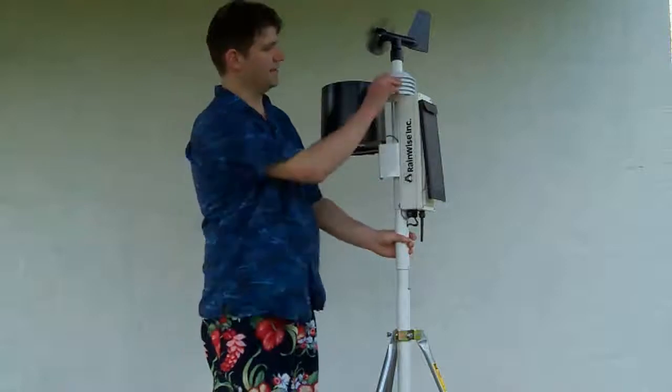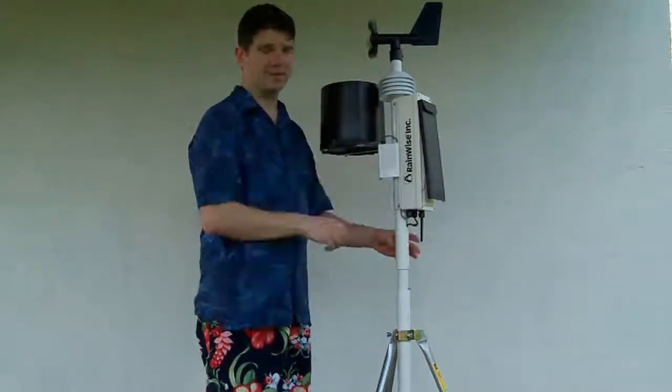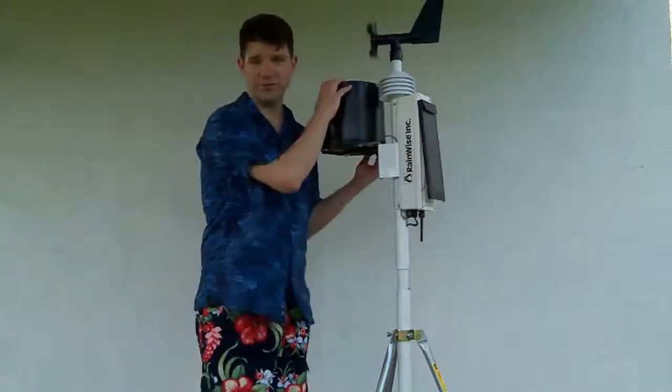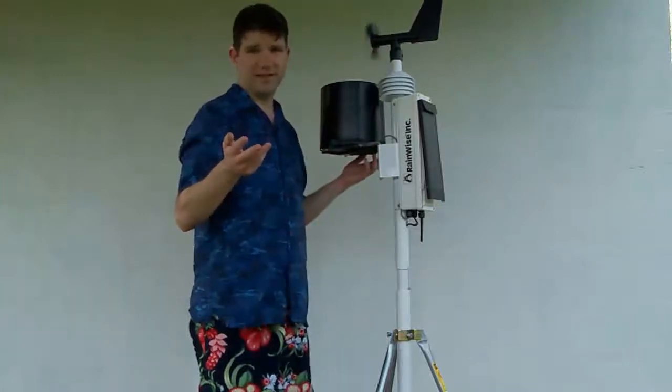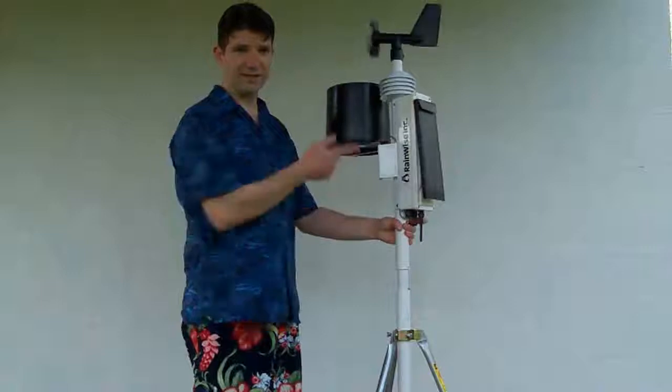The parts are pretty obvious here. You've got your temperature humidity sensor in this housing and your anemometer on top. Your big old rain gauge right here. The rain gauge has a special shield inside of it so you don't get birds dropping seeds and other things into the rain gauge, which is good. And this all mounts easily on a tripod.